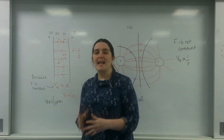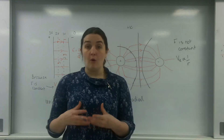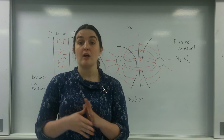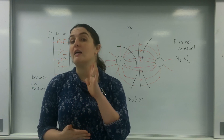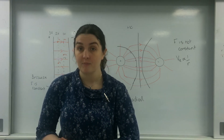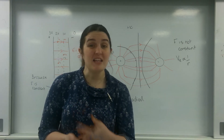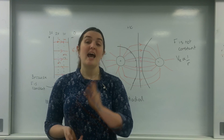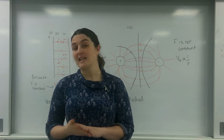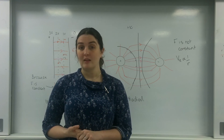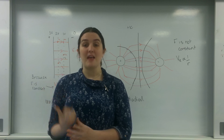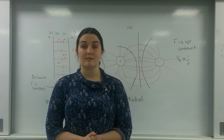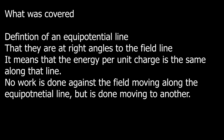When you're drawing equipotential lines, you must make sure that the lines you are drawing are at right angles to the field lines. If in doubt, put the electric field lines in first and then draw at right angles to them. So that is how to draw equipotential lines. Thank you.